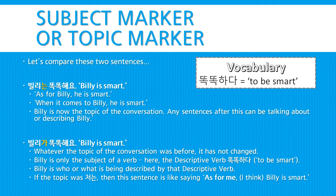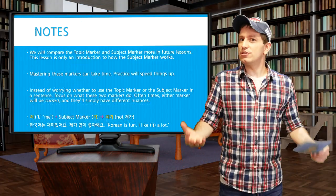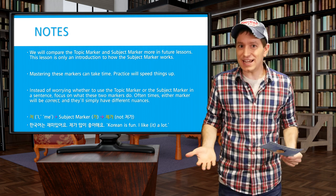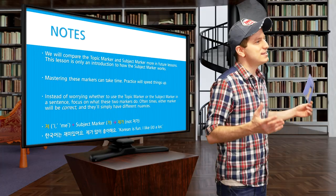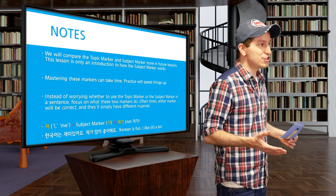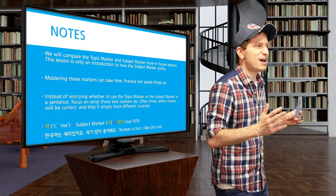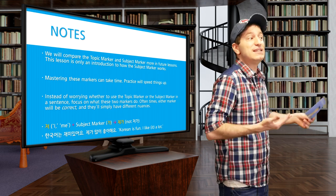If the topic before this sentence was 저는, then it would be like saying 'As for me, Billy is smart' or 'As for me, I think Billy is smart.' I'll be giving you many more examples of both the topic marker and the subject marker in future lessons. For now, don't stress about it — it might take a lot of time to master, but you will get the hang of it. And instead of worrying about whether you should use the subject marker or the topic marker, just think about what these markers do. Because oftentimes either will be correct — just the nuance might be different.